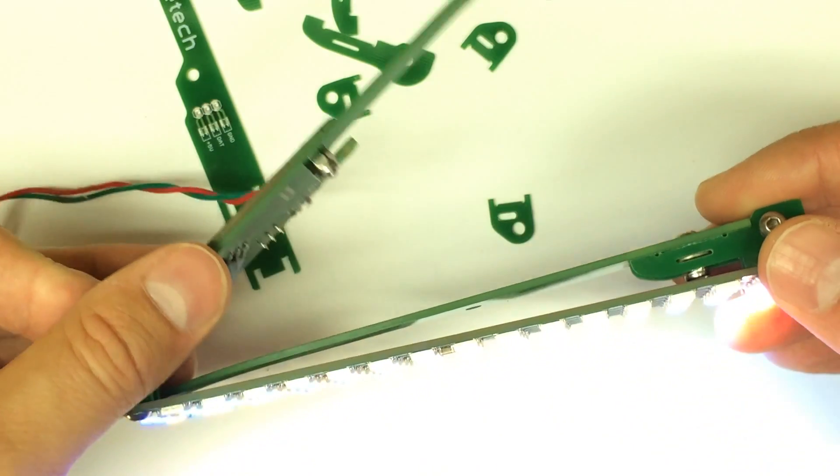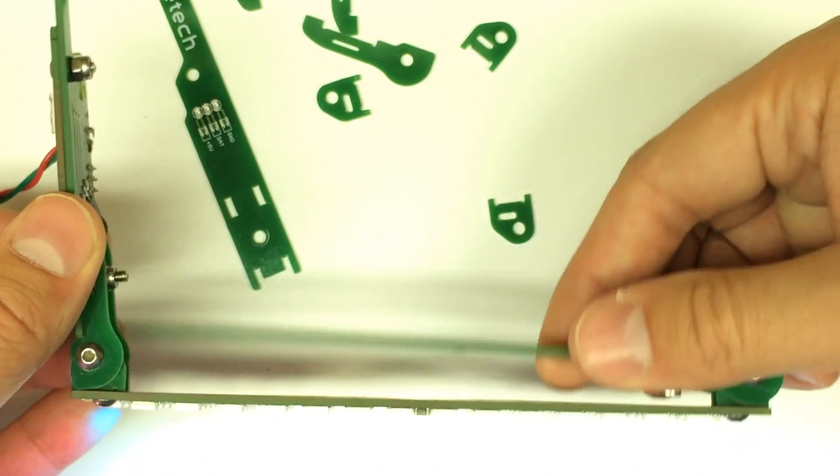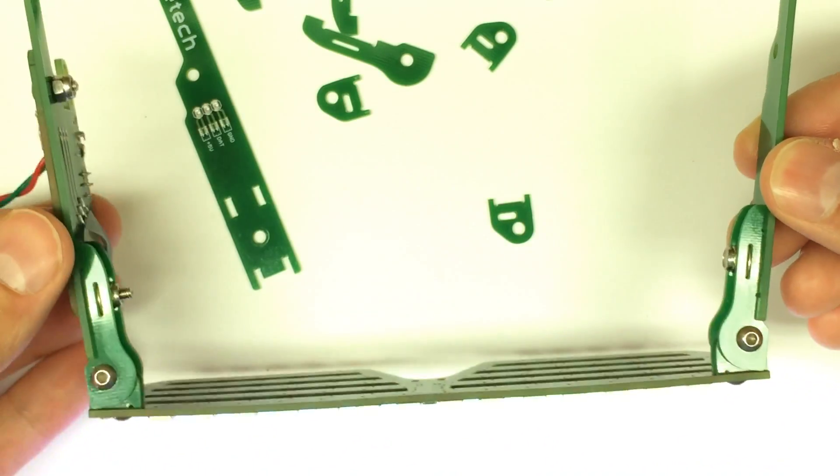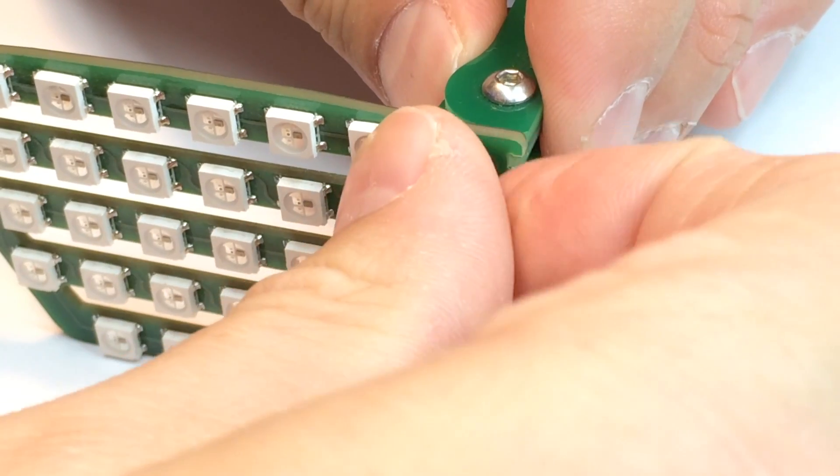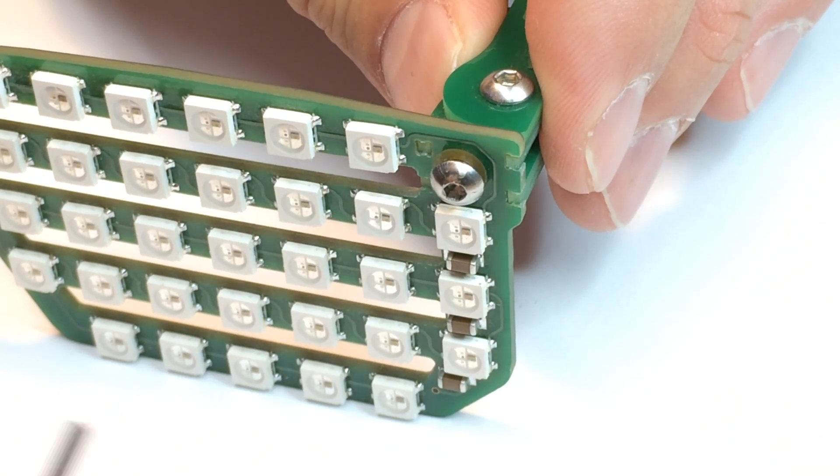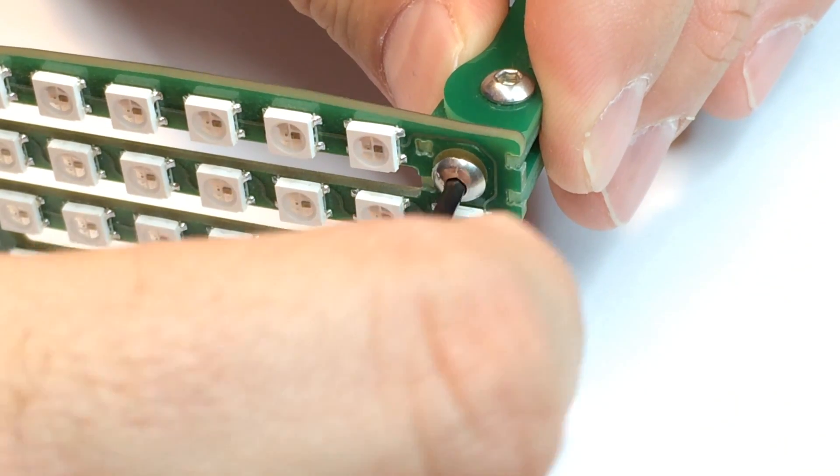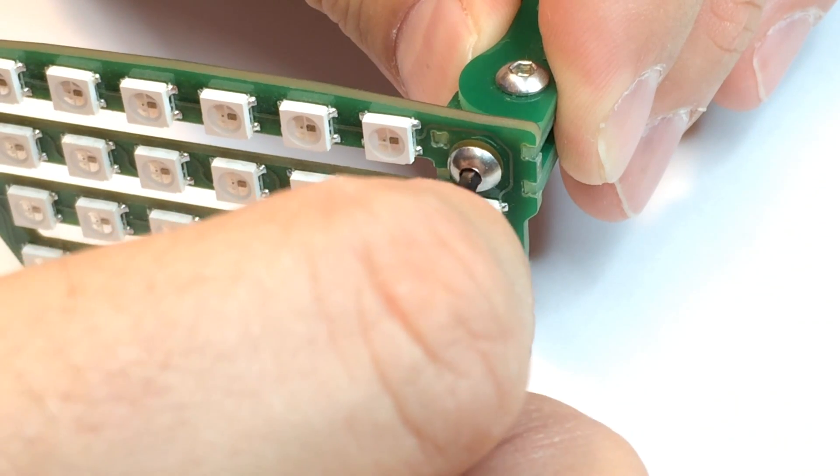The frame itself is made entirely of circuit boards, including the hinges that allow it to fold. Everything is made from the same material and is produced in just one manufacturing step. The parts fit together like a 3D puzzle and then they're securely locked together with screws.